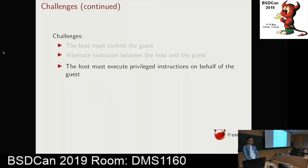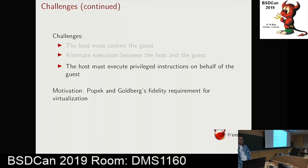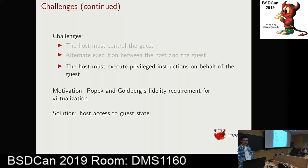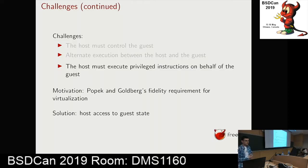The next challenge is that the host must be able to execute privileged instructions on behalf of the guest, to respect Popek and Goldberg's fidelity requirement — that the guest's execution in a virtual machine must be identical to running on bare metal. The solution was to give the host access to the guest state: first to read that state and determine what privileged instruction the guest was trying to execute, and then to modify the guest state to emulate the successful execution of that privileged instruction.